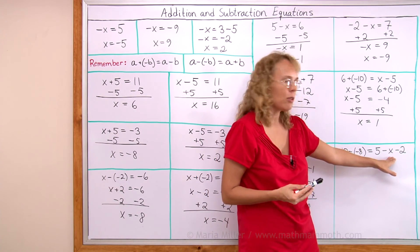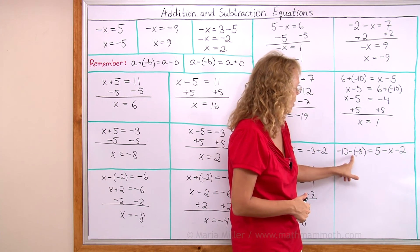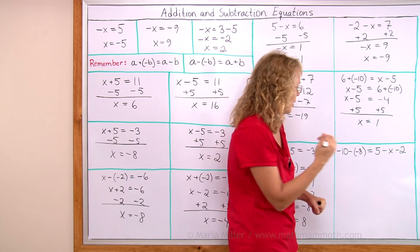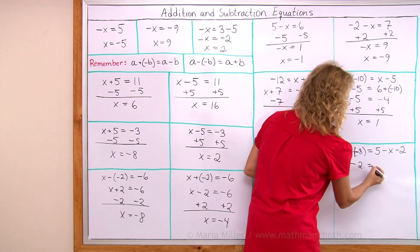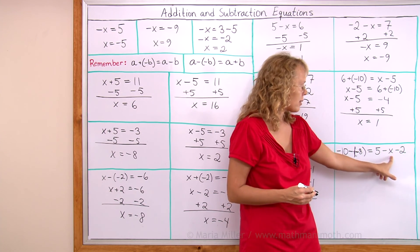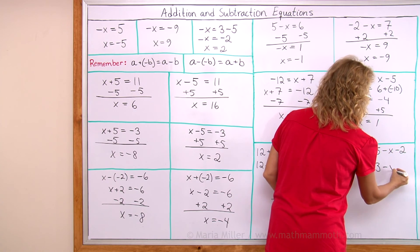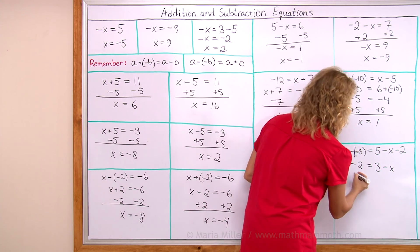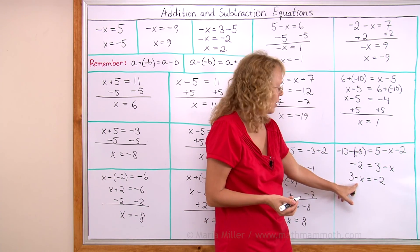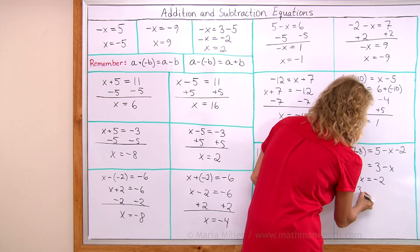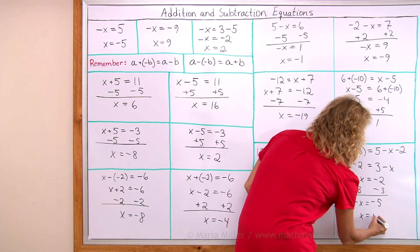This last equation has x on the other side and some calculations to be done. On the right side, there's a negative negative, so I change that into a plus: negative 10 plus 8 is negative 2. On the left side, there's 5 plus negative x minus 2 — I can do 5 minus 2 to get 3, leaving 3 minus x. I'll swap the sides: 3 minus x equals negative 2. To get rid of the 3, I subtract 3 from both sides, leaving negative x alone, and negative 5 on the right. So x must equal 5.